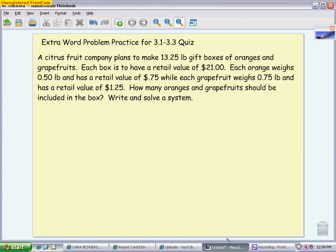You want to read over the problem and figure out what are the unknowns, what are the things that need variables. So we're talking about a fruit company that is making gift boxes. We know about the weight of the fruits and the money value, the monetary value. And the question is how many of each fruit should be in each box. So the unknowns, the things that I need, is I need to figure out how many oranges and how many grapefruits.